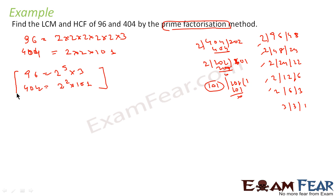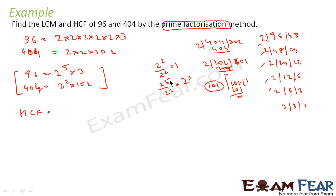Now, to find the HCF, we take the common prime factors with the lowest (minimum) powers. For the factor 2, the powers are 5 and 2 — the minimum is 2. For 3, it appears only in 96 (power 1) and not in 404 (power 0), so it is not common. For 101, it appears only in 404, so it is not common. Therefore the HCF is 2 to the power 2, which is 4.